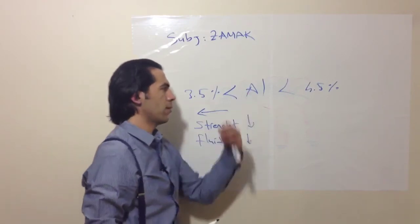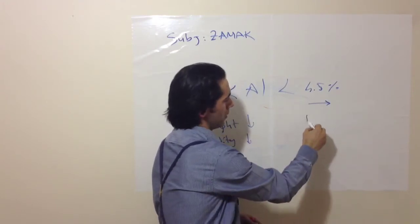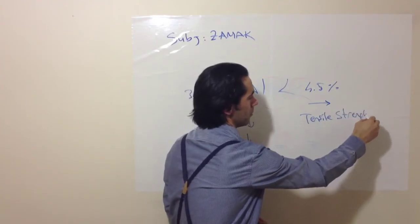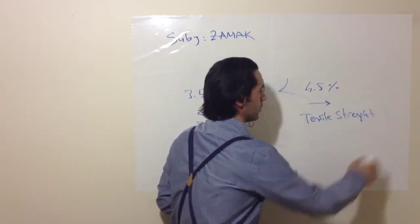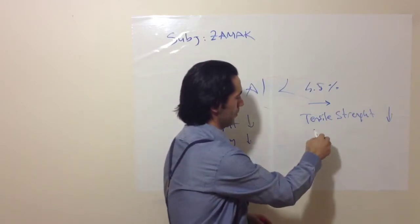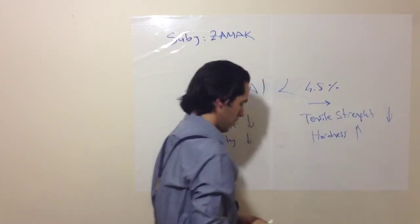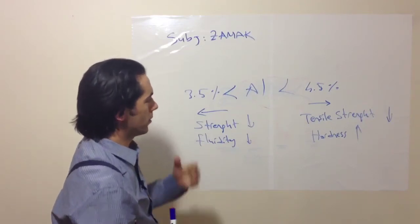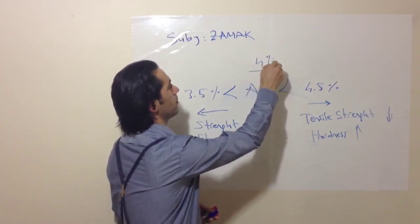If we increase the amount of Aluminium, such as more than 4.5%, tensile strength goes down. That means hardness increases. So in metallurgy, that means it became a brittle material. That's why we keep it at level, 4%.